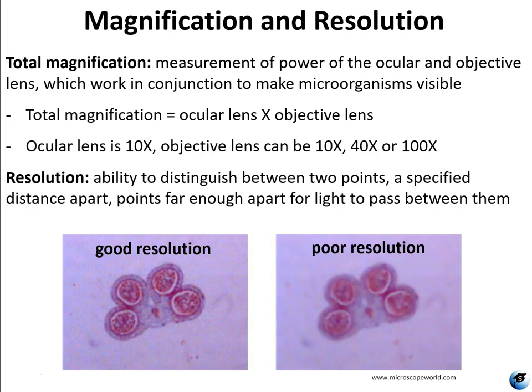It's also really important to understand that magnification and resolution are two totally different things. Magnification only takes an object and makes it look bigger — so if that object is not in focus when you go up in your objectives, it's still going to be out of focus. Magnification just enlarges your image. Resolution is the thing that makes it so you can clearly see it — the ability to distinguish between two points a specified distance apart, far enough for light to pass between them. So we're actually talking about whether something is resolved, whether it has good resolution.